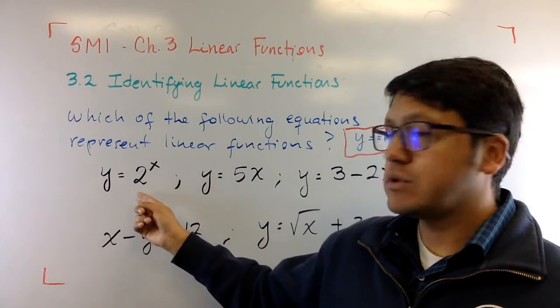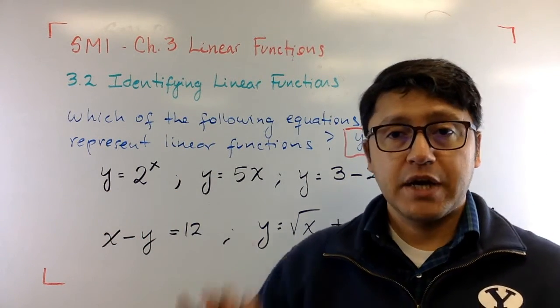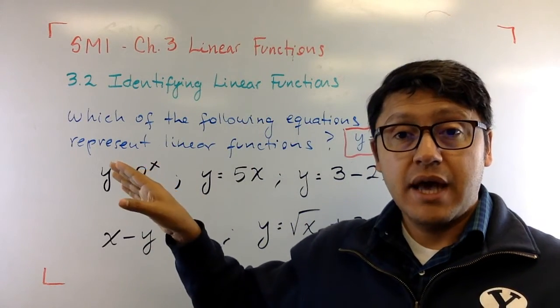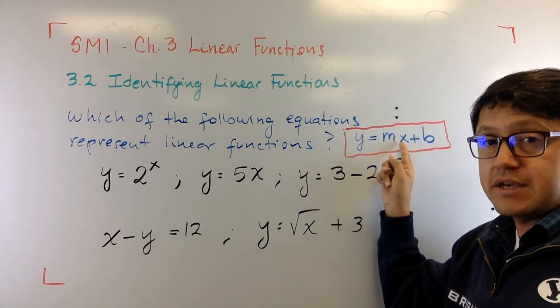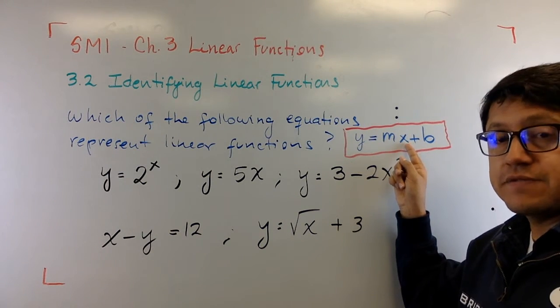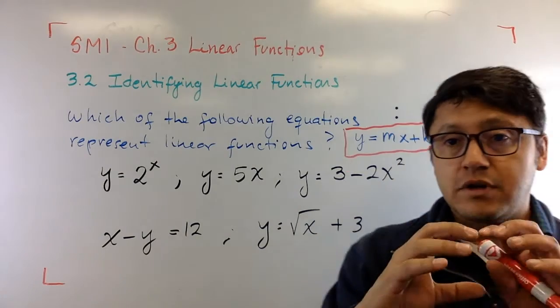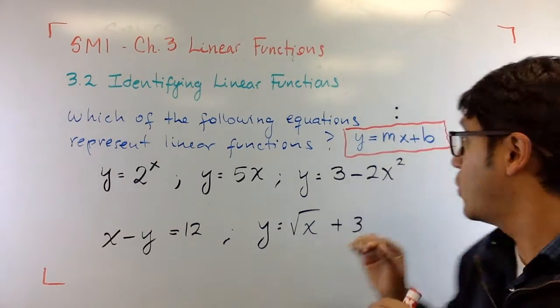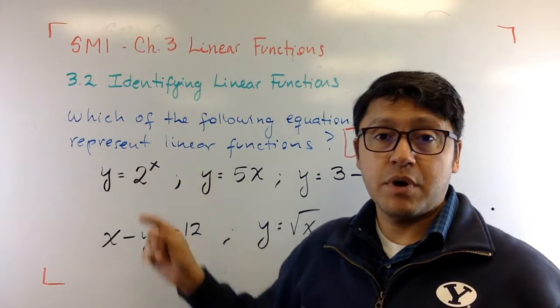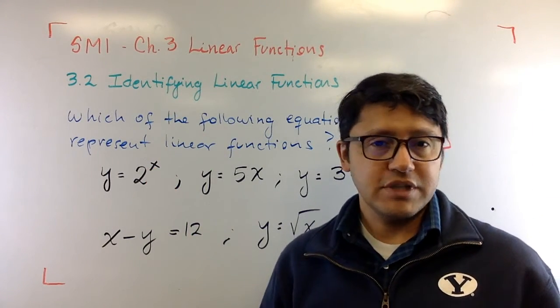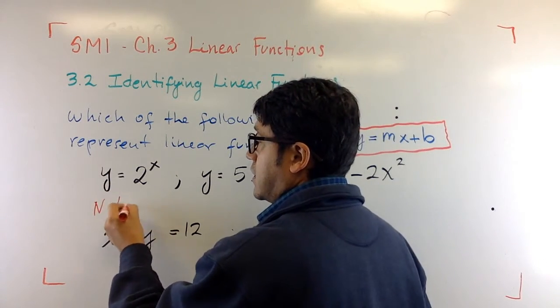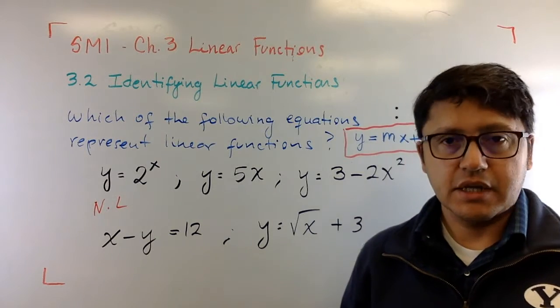Let's begin with this: y equals 2 raised to the x. x is right here as an exponent and it does not qualify as being a linear one because in the linear function x is part of the base and has exponent one. In this case, it being part of an exponent—actually, this is what we call an exponential function, by the way—this is not a linear function, so we say it's non-linear.